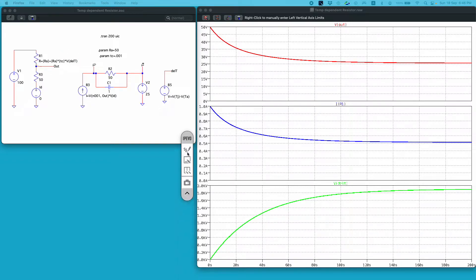Now let us run the simulation. If I run the simulation on the top you see I am plotting output voltage, in the middle I am plotting the current through this R1 or this current ID.